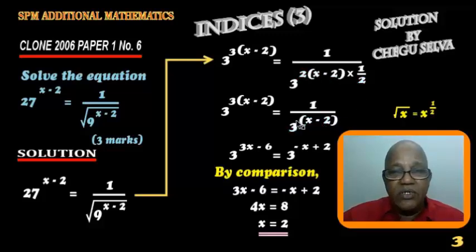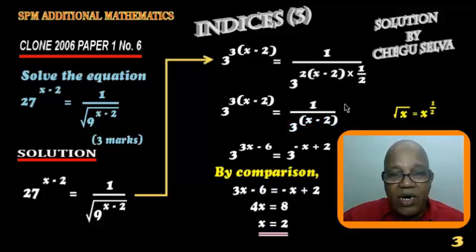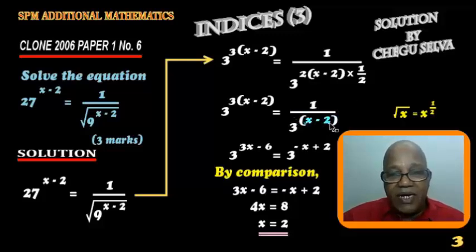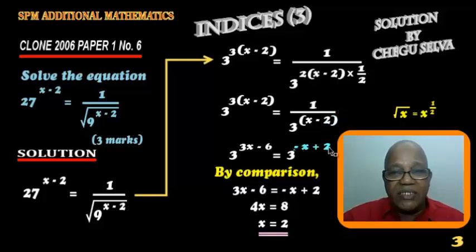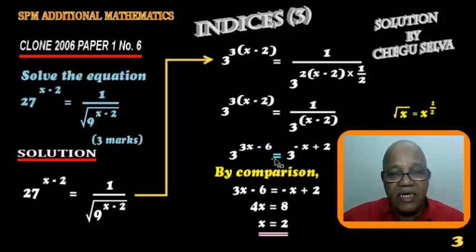So now you bring this up — bring the power up using one of the laws of logarithm. When you bring it up, the power becomes negative bracket X minus two, which simplifies to negative X plus two. So three to the power of three X minus six equals three to the power of negative X plus two.